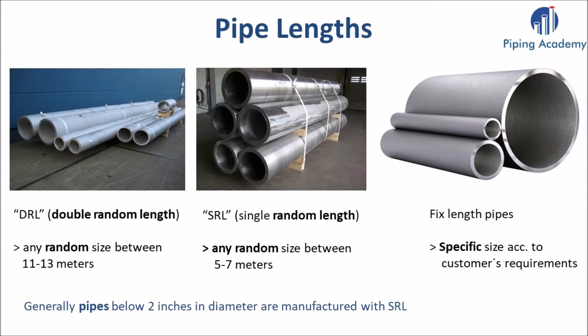Let me also tell you something about length types for pipes, as you will find them in many product descriptions. You will find the letters DRL, which means double random length. A double random length can be a pipe of any random size between 11 and 13 meters. But please keep in mind that your standard 40-foot sea container has only room for a maximum length of 12 meters. So when you need to ship double random length using a 40-foot container, make sure to order lengths only up to 11 meters 50 or 60, so it can perfectly fit in your container.